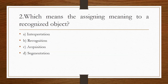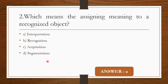Question 2: Which term means assigning meaning to a recognized object? Option A: Interpretation. Option B: Recognition. Option C: Acquisition. Option D: Segmentation. The correct answer is Option A — Interpretation.